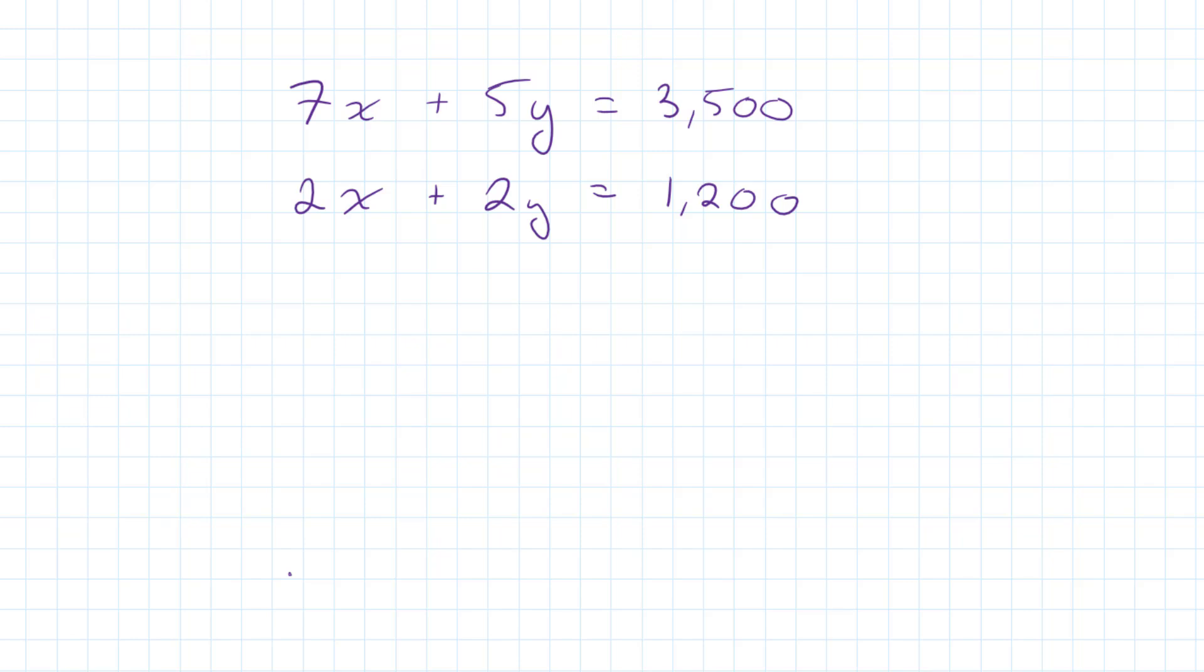What I'm going to do is subtract one equation from the other. And to do that, we've got to set one of the variables, either the x or the y, to be identical in both equations. So I am now looking at these numbers and I say, if I multiply this one by 2.5, the two becomes a five, doesn't it? So I'm going to multiply both sides of the equation by 2.5.